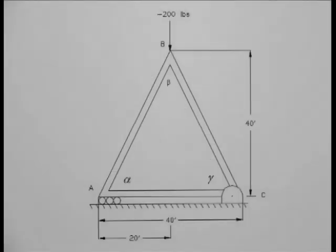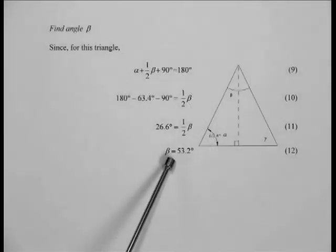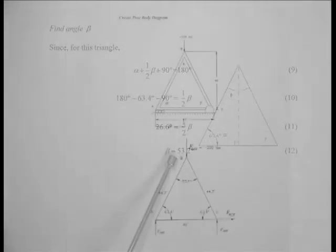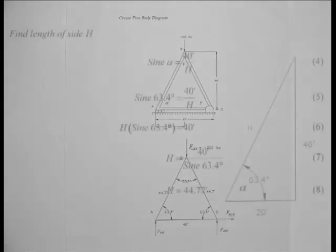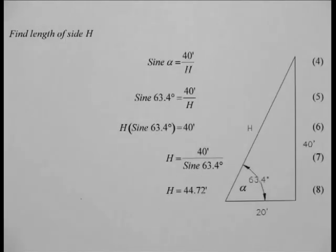Compression is when pressure is being applied inward on both ends. Tension is when the beam is getting stretched on both ends. Now that you know the basics of what a truss is and why they are used, you will be shown how to mathematically calculate the forces acting on each beam or member in a truss.